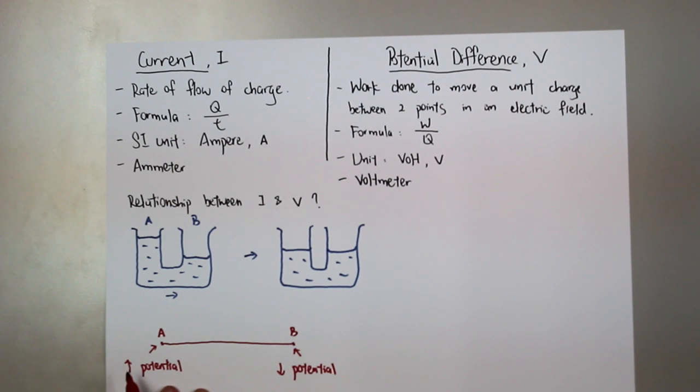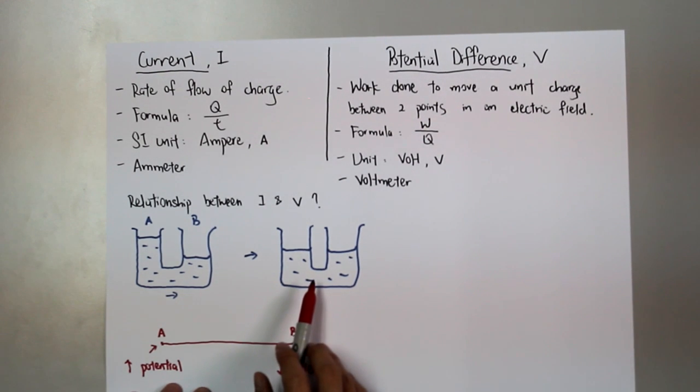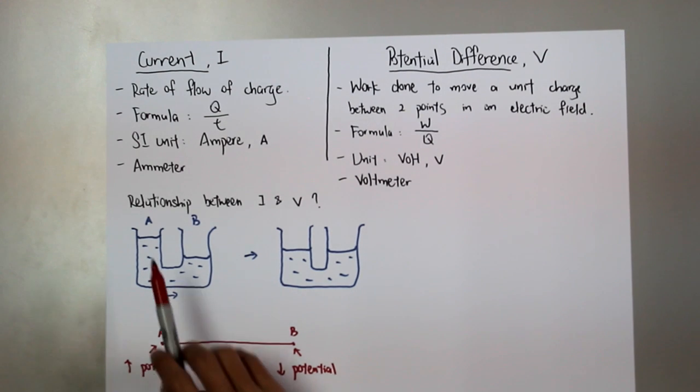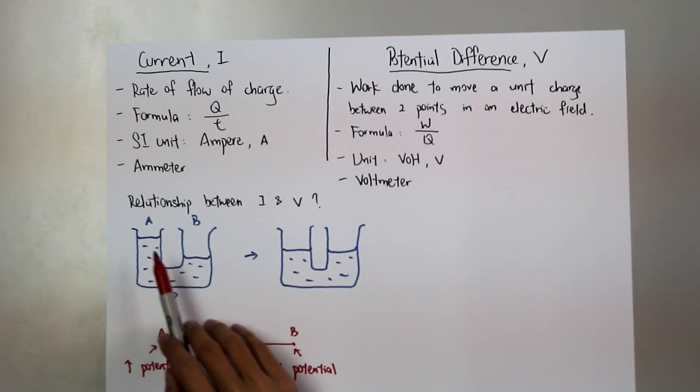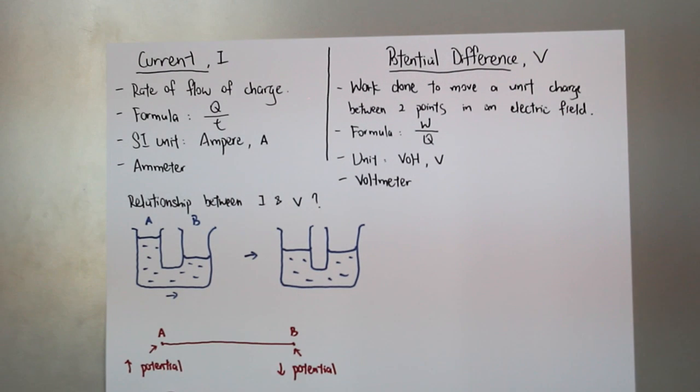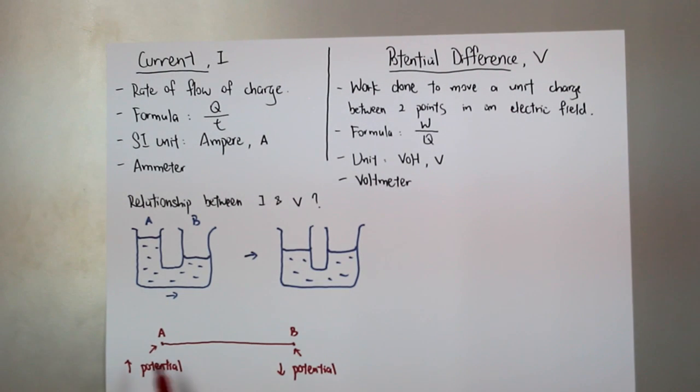And this higher potential here causes the point B to have a lower potential. And what's happening in this wire is exactly the same as what happened for the water container. There is a high potential at A and a lower potential at B, where we have a high potential at A and a low potential at B as well. Therefore, we can compare the difference between the water level as the potential difference between the wire and the rate of flow of water to the current flow in the wire.